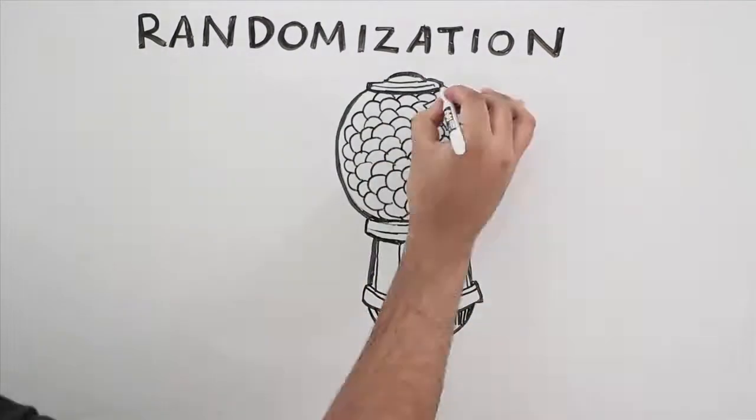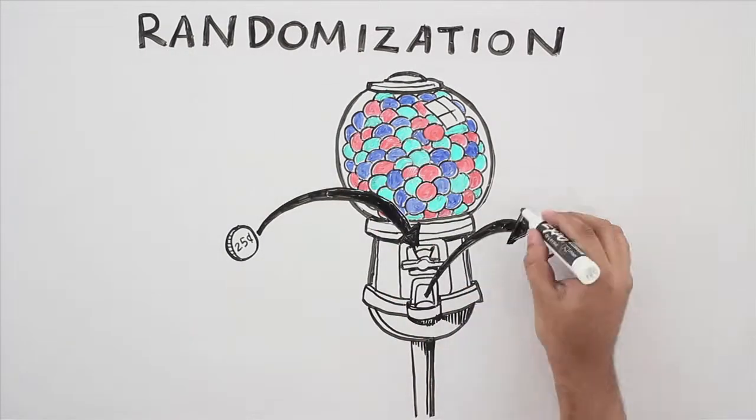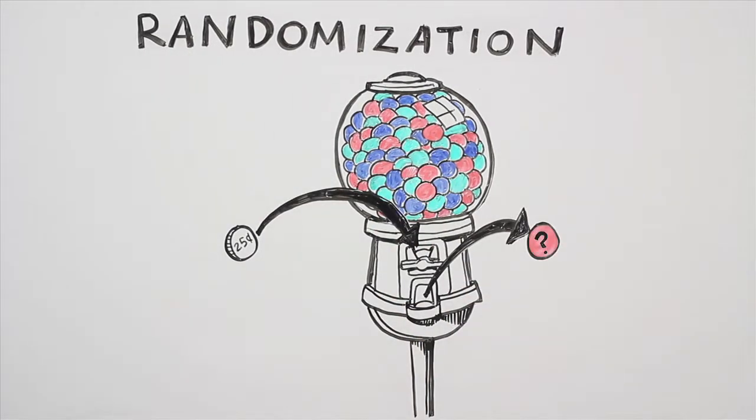Imagine a gumball machine. You put in a quarter and then a gumball comes out. The color of the gumball that comes out is decided by chance, but no matter what color gumball you get, you know it's a gumball.